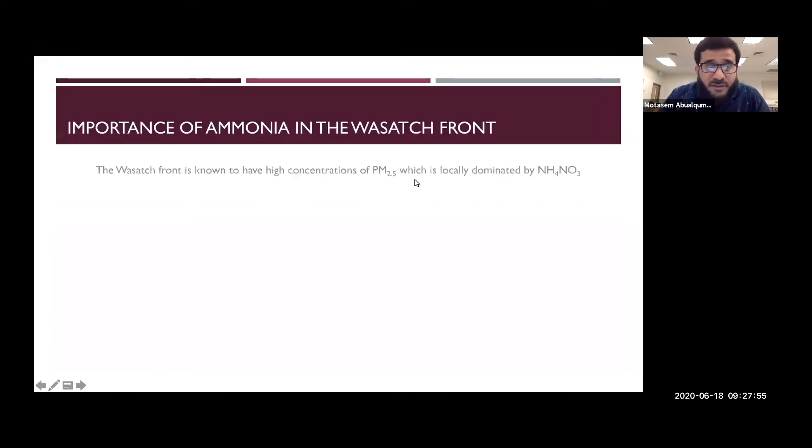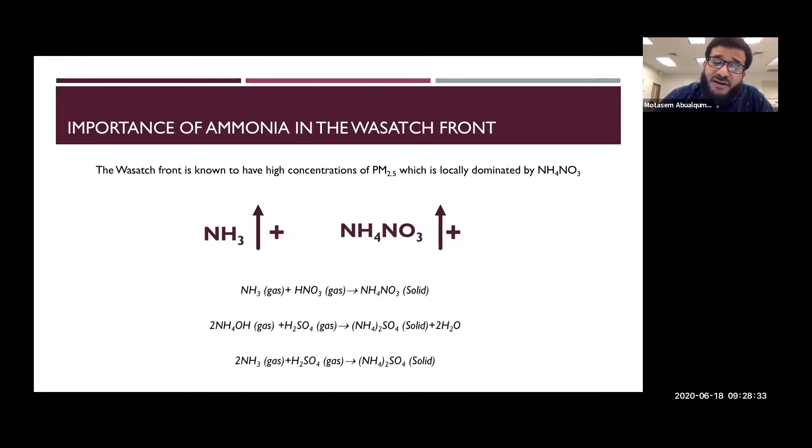The first thing I would love to share in this presentation is why do we really care about ammonia from motor vehicles. This is simply because the Wasatch Front, which is our study area, is known to have high concentrations of PM2.5, which is locally dominated by ammonium nitrate. When you have more ammonia emitted into your atmosphere, that means that more ammonium nitrate will form as a result. The equations here clearly show how ammonia causes the formation of ammonium nitrate in the first equation and the formation of ammonium sulfate in the second and third equation.